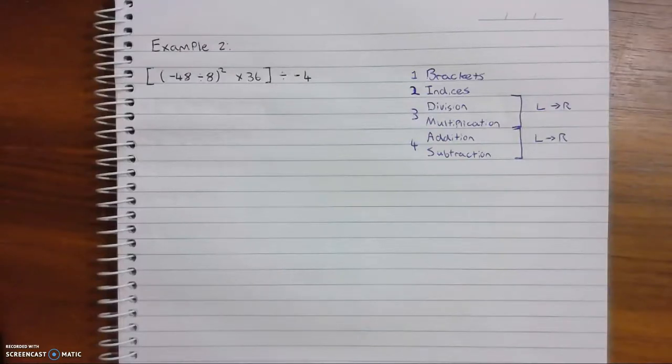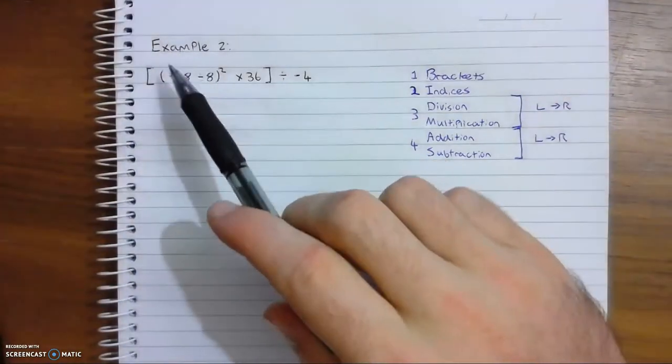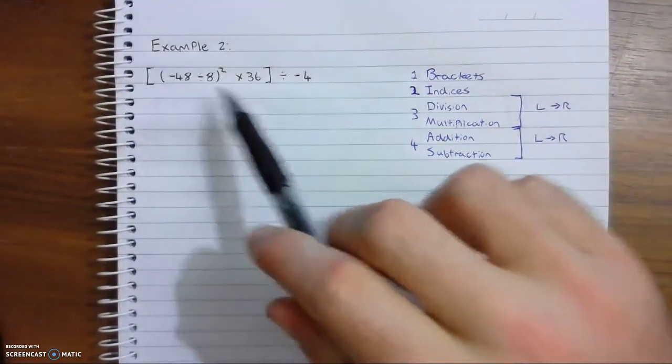Hey guys, so in this video I'm just going to show you a more complicated equation. I'm still using the rules of BIDMAS to complete it. So in this one here we have big brackets, and inside the big brackets we have little brackets.